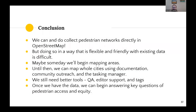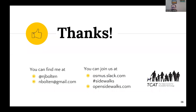In conclusion, we can and do collect pedestrian networks in OpenStreetMap. Doing so in a way that's flexible and friendly with existing data is pretty difficult. Maybe someday we'll begin mapping things like areas, but until then we can map full cities using our documentation, community outreach, and the Tasking Manager. We still need better tools, QA, editor support, and tags. But once we have that data, we can begin answering key questions of pedestrian access. You can find me at NJ Bolton on Twitter, or reach me at nbolton at gmail.com. You can also join the sidewalks Slack at OSMUS or check out our website at opensidewalks.com. Thanks all for having me.